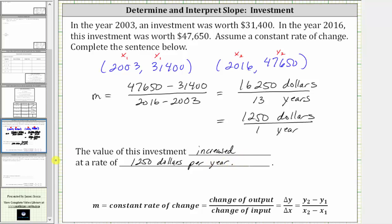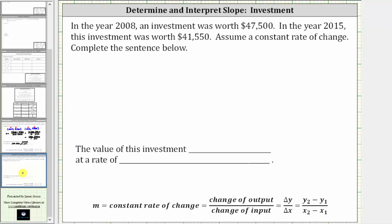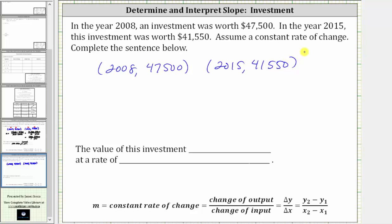Let's look at a second example. Again, let's write the information as ordered pairs. In the year 2008, an investment was worth $47,500, giving us the ordered pair 2008 comma $47,500. In the year 2015, the investment was worth $41,550, so the second ordered pair is 2015 comma $41,550. Let's label the first ordered pair x sub one comma y sub one and the second ordered pair x sub two comma y sub two.